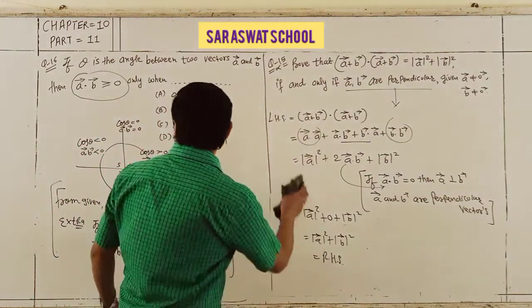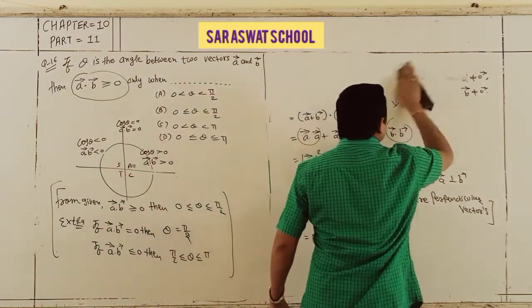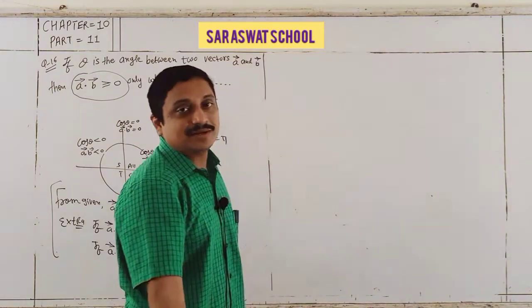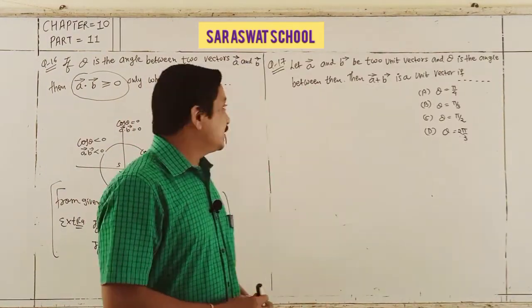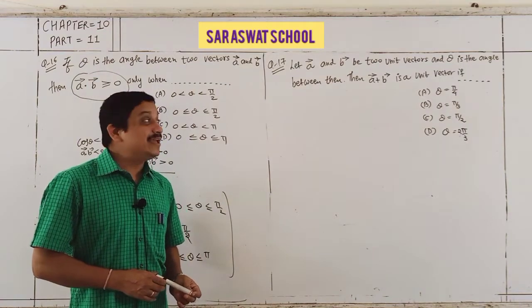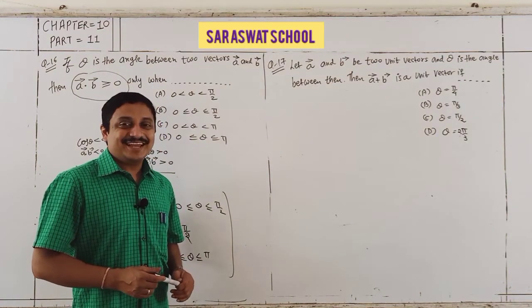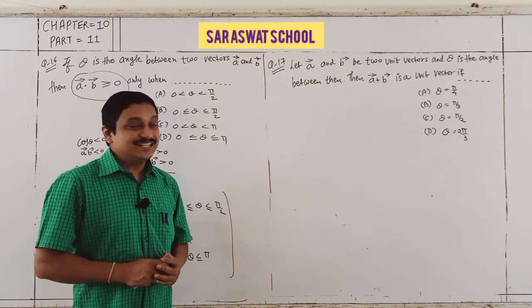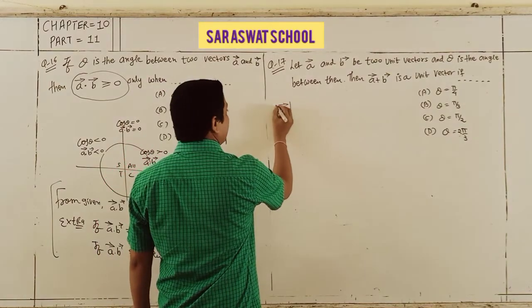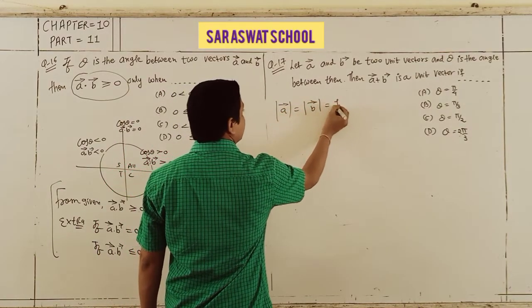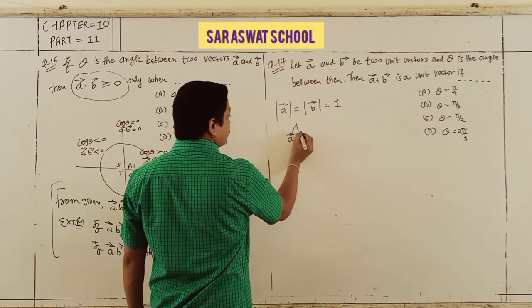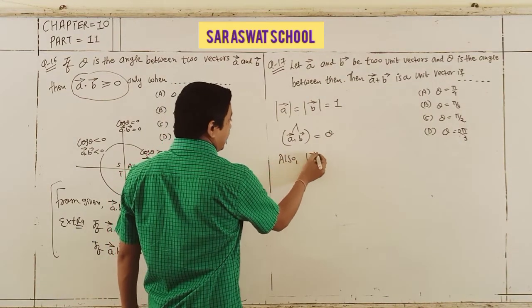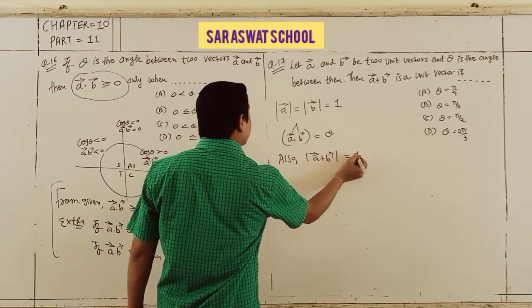Now Question 17 — also an MCQ. If A and B are unit vectors, θ is the angle between them, and A + B is also a unit vector, find θ. Since A and B are unit vectors: |A| = |B| = 1. A + B is a unit vector means |A + B| = 1.